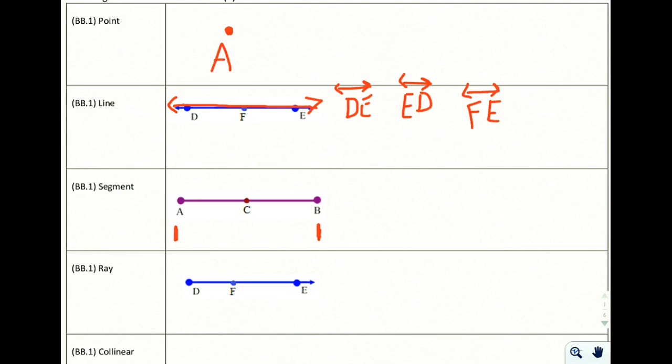So if we were to name this, we could call this AB. And we're actually going to leave it without any lines on top, just because that's the way you will see line segments typically written in this course, in the homework packet, quizzes, tests, and things like that. So we could just call it segment AB or segment BA.